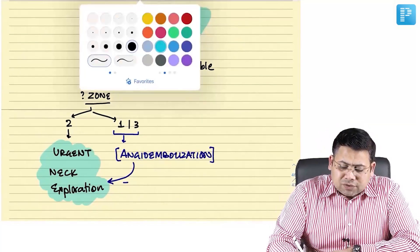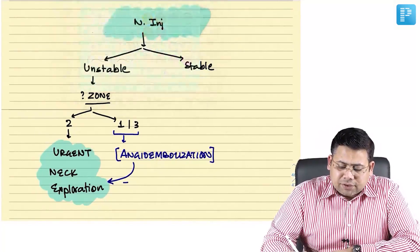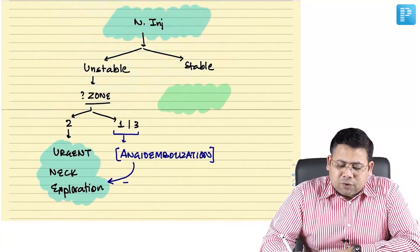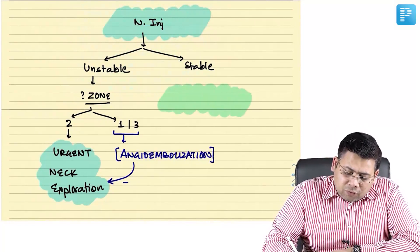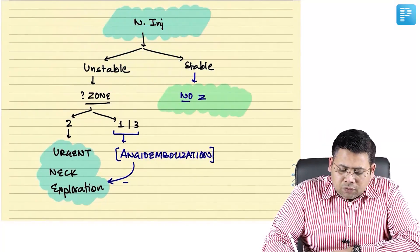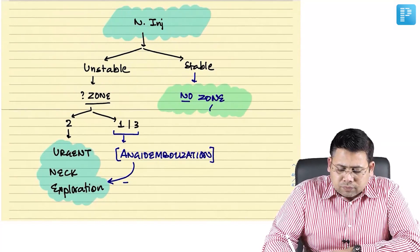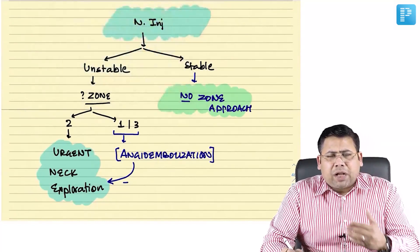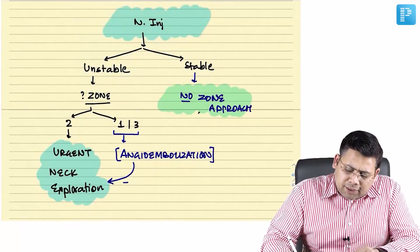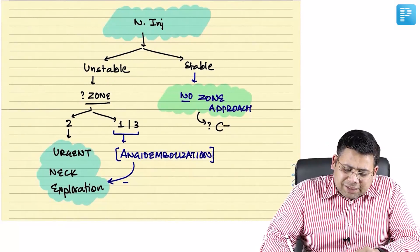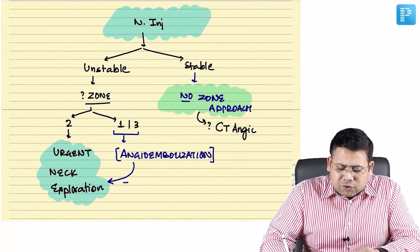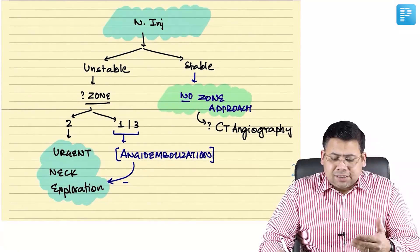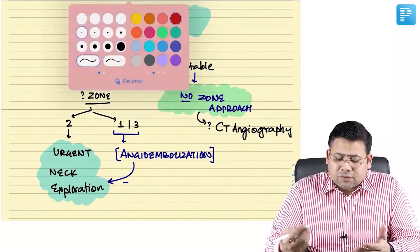If the patient is stable, you follow a no-zone approach — you do not give priority to any zone. Instead, you go for CT scan with angiography, i.e., CT angiography, to enhance evaluation of the vascular structures.